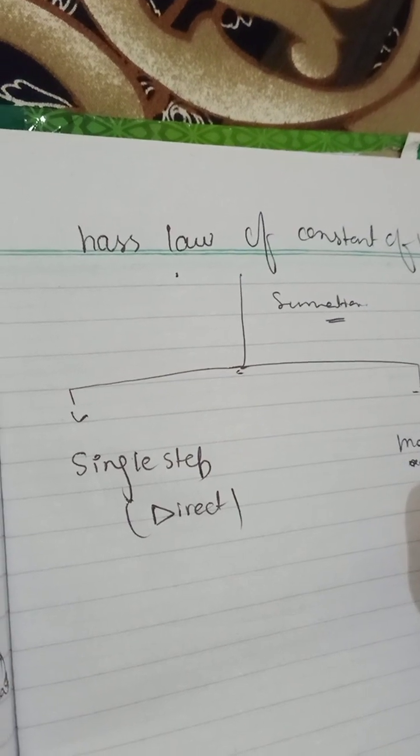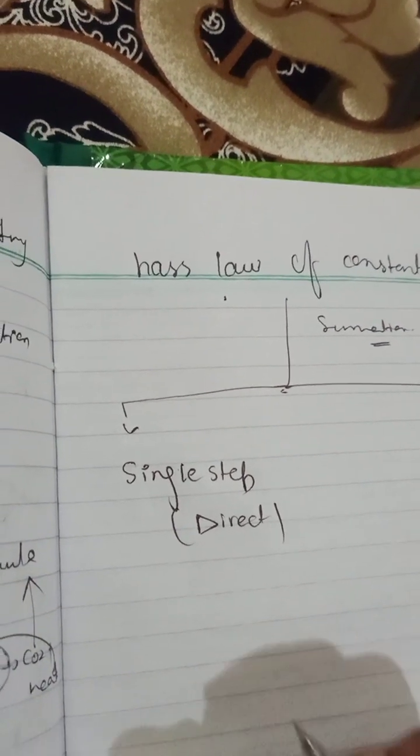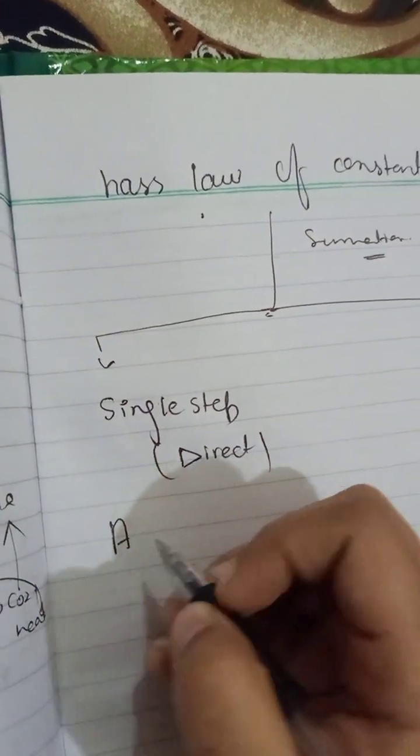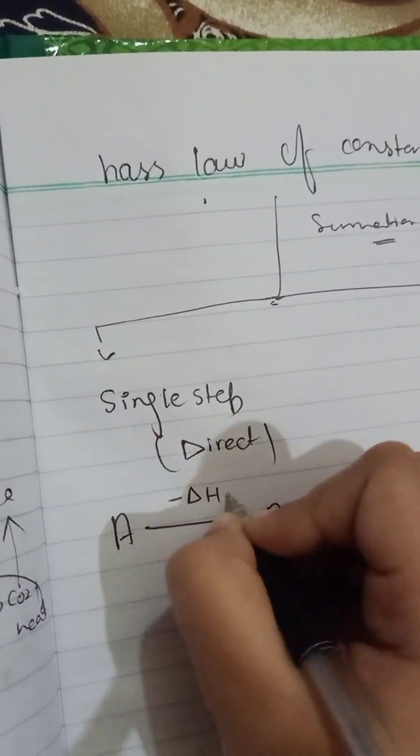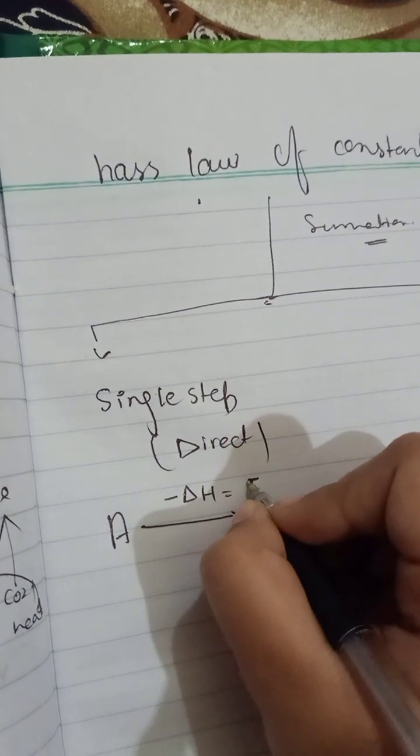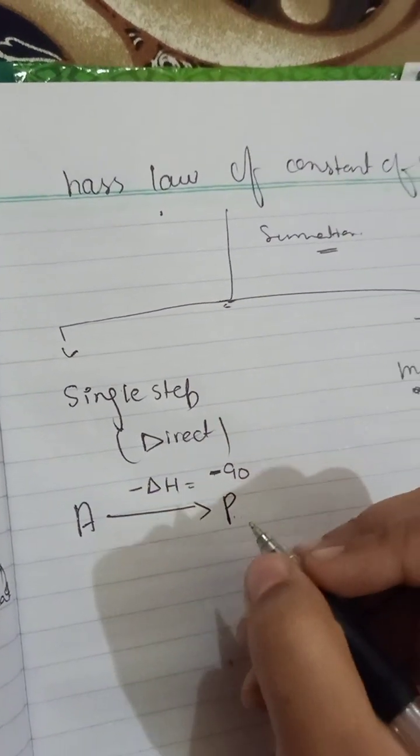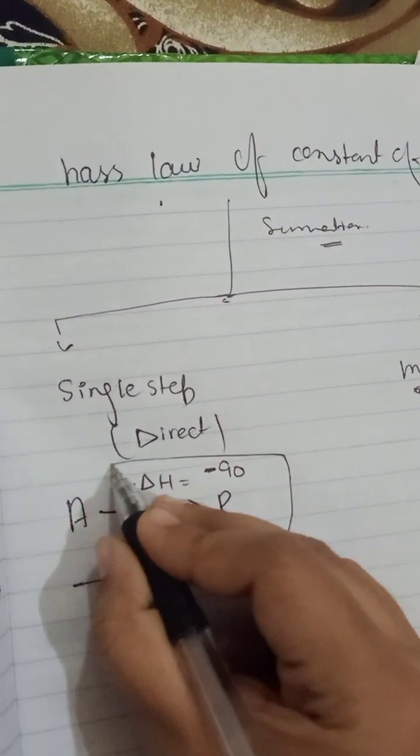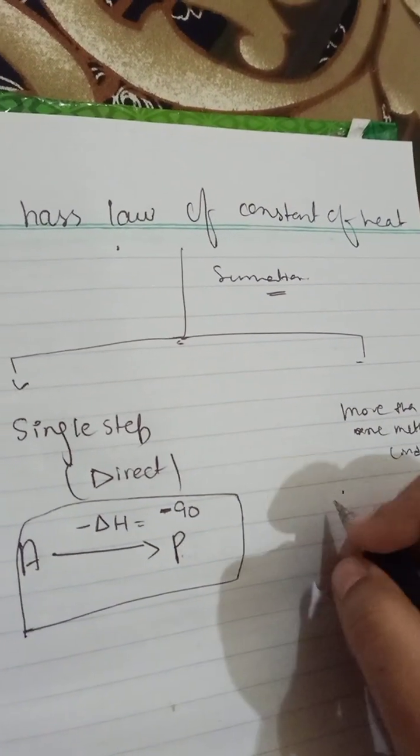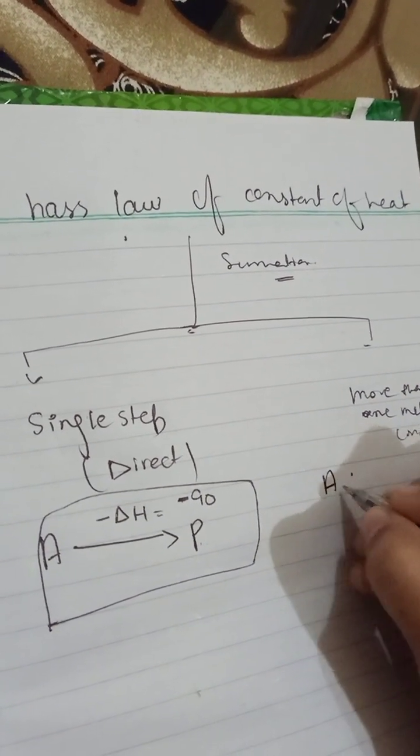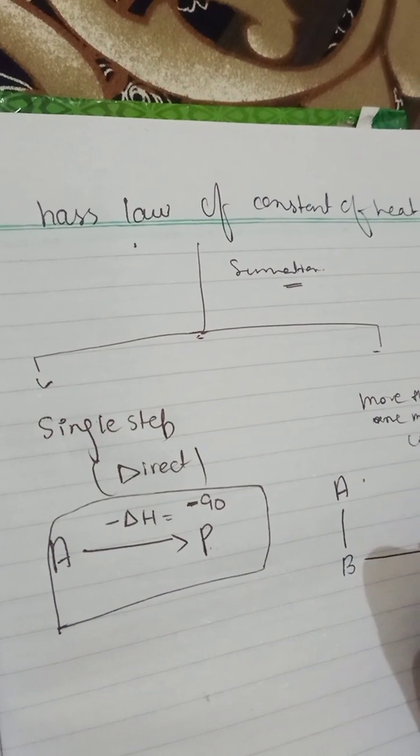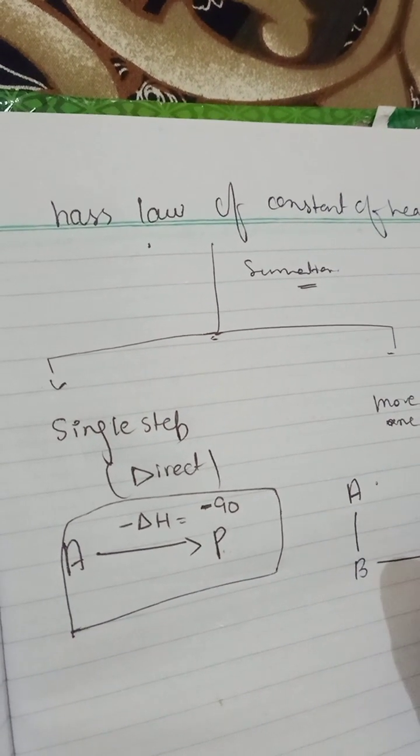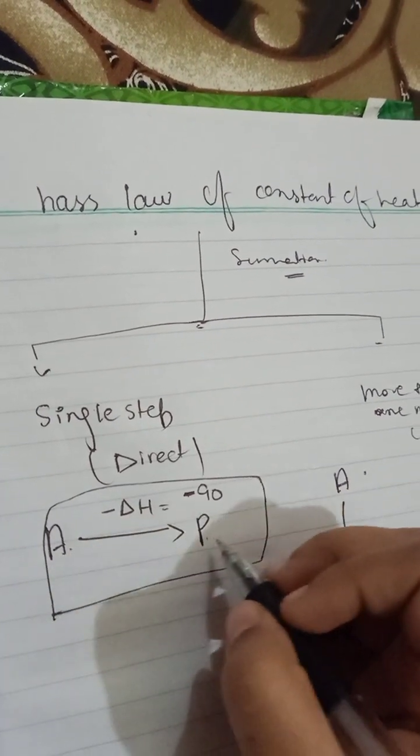What does it mean? For example, I'm having a reactant A and it's directly converted to product D with the release of heat that is minus 90. All right, this is one step and the reaction is completed here.